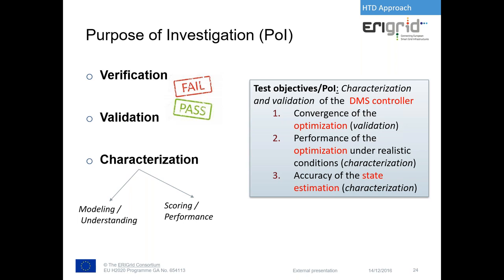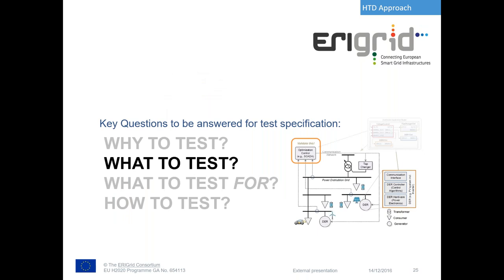Applying these categories to our example: one POI is to validate that the optimization converges in all relevant cases; a second is to characterize the performance of the optimization under realistic conditions; and a third is to identify the accuracy of the state estimation, which is part of the DMS controller — also a characterization task.